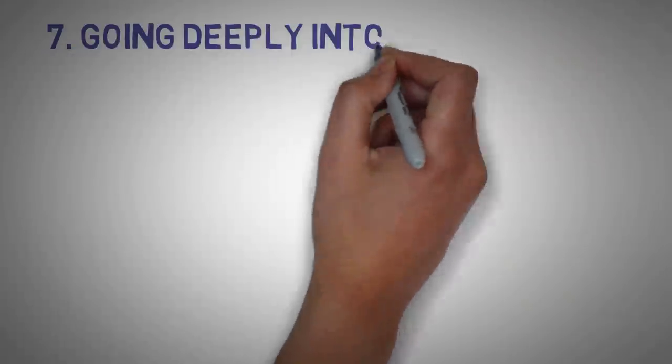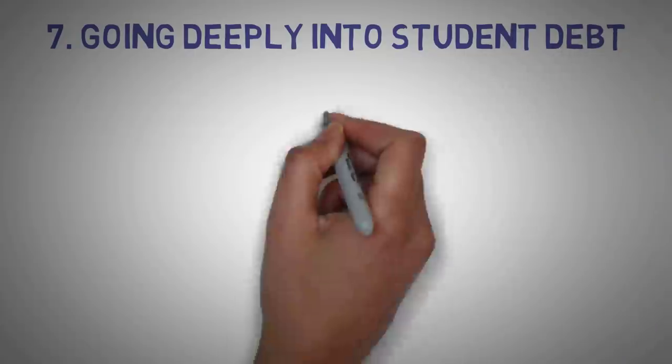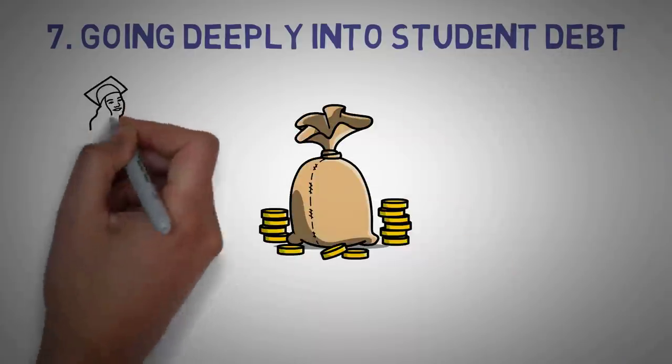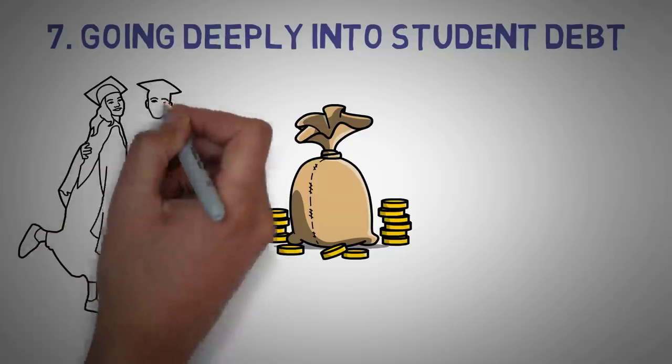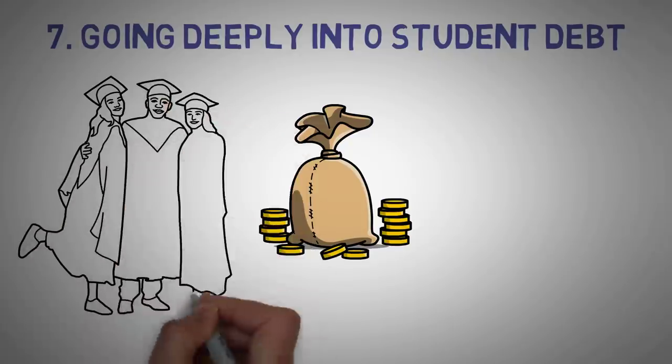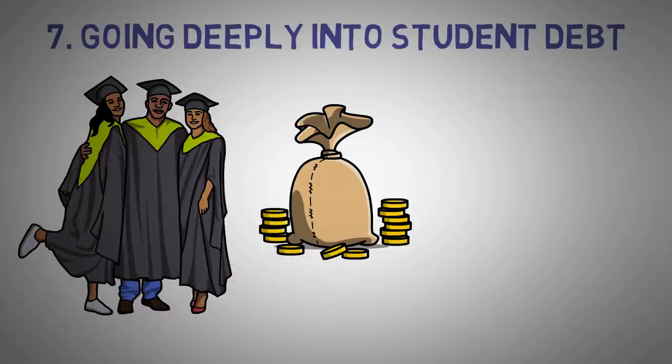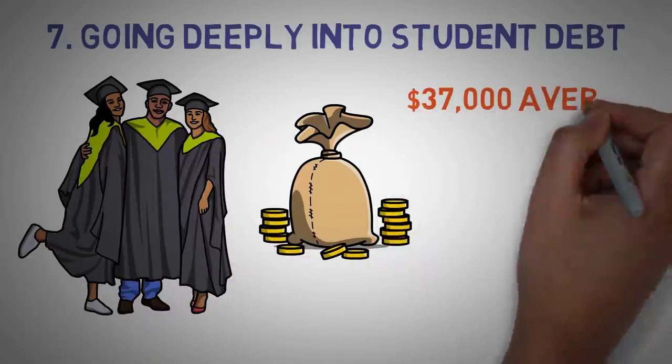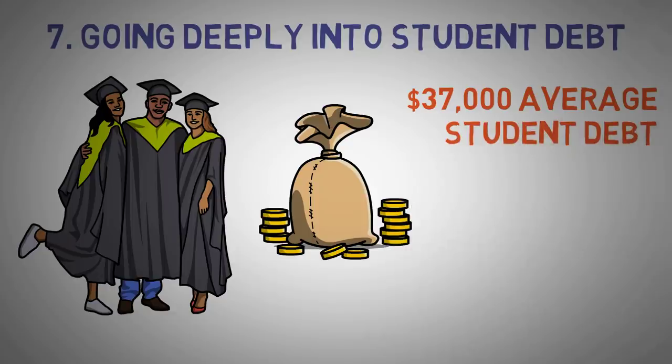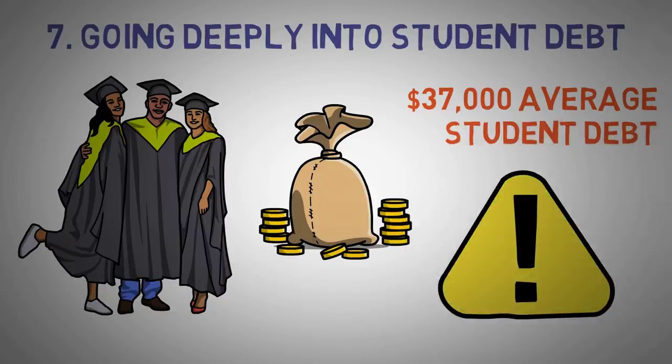Number seven, going deeply into student debt. Borrowing money to go to college to further your education is a path that many take. The degree you get could allow you to earn much more money in the workforce. With the average student loan debt of over $37,000 per borrower, this isn't a decision to take lightly as this amount can be crippling when starting your career.